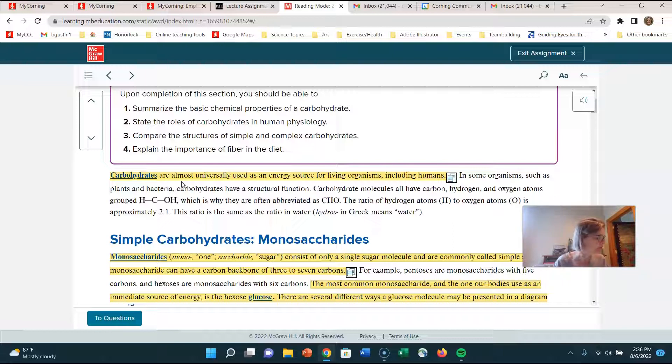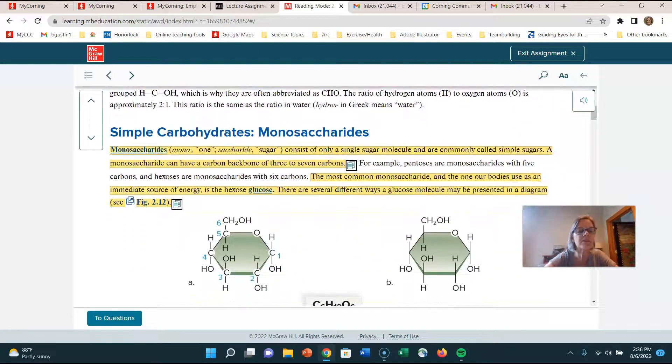So it says compare the structures of simple and complex carbohydrates. So if you look at our vocabulary, you'll see our vocabulary talks about monosaccharides, disaccharides, and polysaccharides. And so I'm going to kind of go with that terminology that's in your textbook. And then you're going to learn a couple of examples of each of those that you should remember. So here we have simple carbohydrates, we call them, are the monosaccharides.